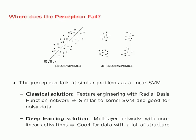How does one classify such data sets with neural networks? There are two solutions. One is the classical solution: you can use feature engineering with a radial basis function network, a very old type of neural network essentially similar to a kernel SVM, which is good for noisy data. The deep learning solution is to use multilayer networks with nonlinear activations, which is good for data with a lot of structure — this is the modern solution used in neural networks, and most of the course will be on this second type of network.